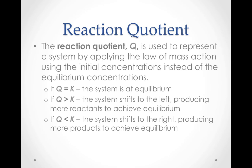In the previous example, we used the law of mass action to see if our conditions were equilibrium conditions. But what we were actually calculating is called the reaction quotient. Q is used to represent a system by applying the law of mass action to a system that is not at equilibrium. If Q is equal to K, then the system is at equilibrium. If Q is greater than K, then the system will shift to the left, producing more reactants in order to achieve equilibrium. If Q is less than K, then the system will shift to the right, producing more products in order to achieve equilibrium.